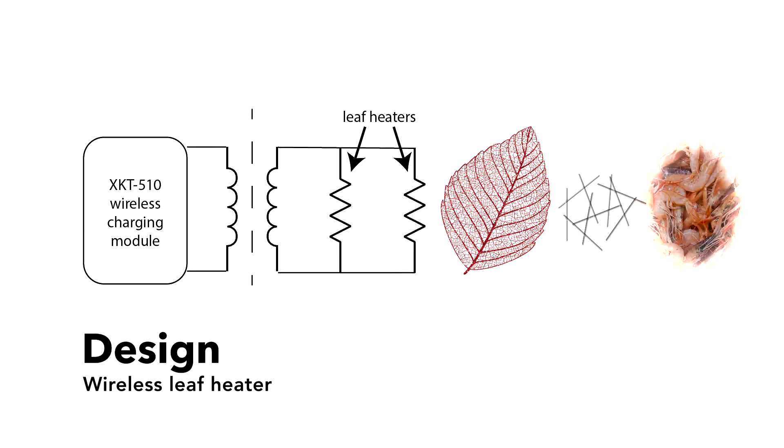We also utilize chitosan, a natural decomposable material made from crustacean shells, to stabilize the leaf skeletons and increase the uniformity of heating across the leaf heaters. Now, I'll show you the fabrication process that we use to make the leaf heaters and integrate them into a paper packaging form.